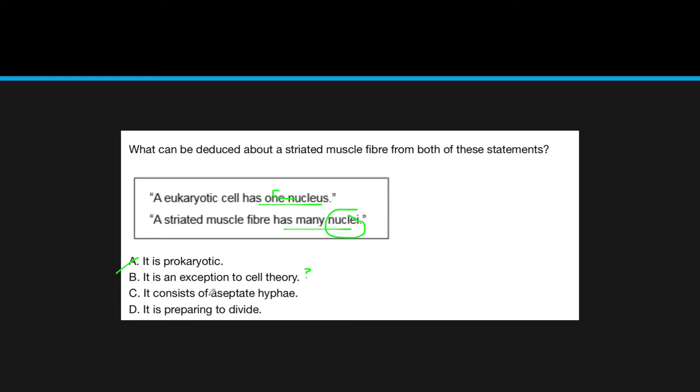It consists of aspartate hyphae? No, this is an organism, a muscle cell is not a different organism. Is it preparing to divide? This gives you no signaling that it's preparing to divide. You might be tricked here by thinking multiple nuclei, right before a cell divides it has two different nuclei, but that's not the case here. What they're trying to get you to look for is that it's an exception to cell theory.